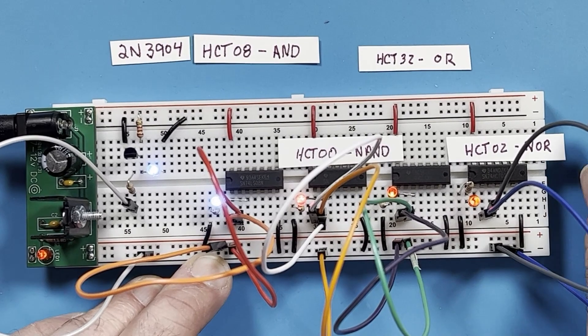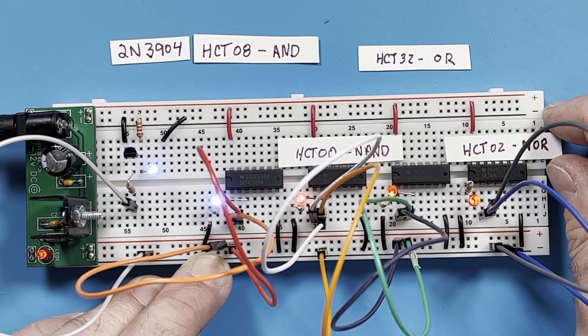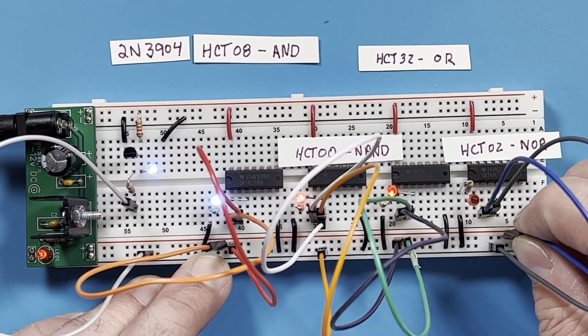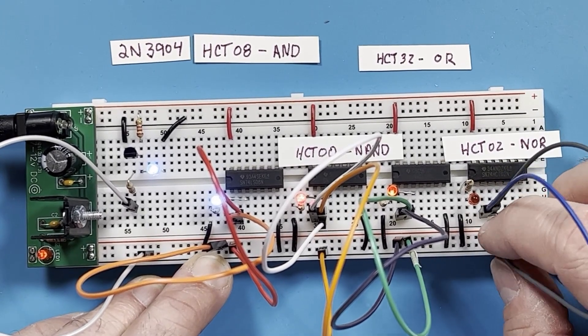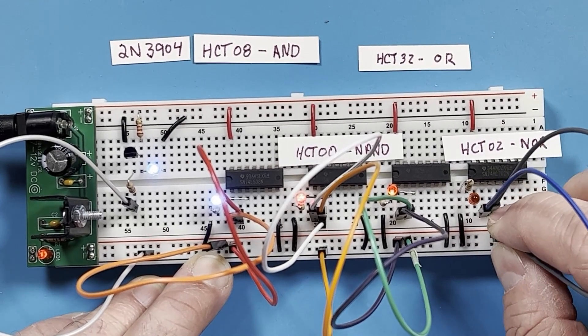So we have the NOR gate, the HCT02. A NOR gate is an OR gate with an inverter on the output. So the output only goes high when both inputs are low. If either or both of the inputs goes high, the output goes low.